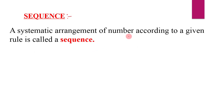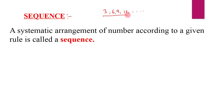Let us get into the topic — that is sequence. A systematic arrangement of numbers according to a given rule is called a sequence. Let us take an example: multiples of 3 — 3, 6, 9, 12 — this is an example of a sequence because these terms are arranged in order, obtained by adding 3 to every previous number. The numbers in a sequence are called terms.